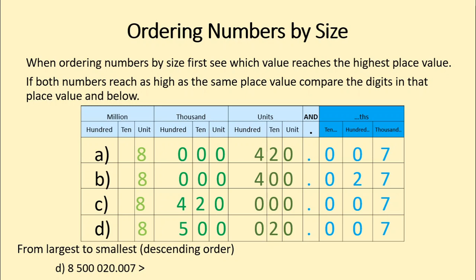My inequality sign shows that D is on the bigger side. The next biggest number: all numbers reach the millions with eight, but the next place value is hundreds of thousands. The only remaining number with a value there is C — it has a four. So that's our next biggest number: 8,420,000 and 7 thousandths. Now we're left with just A and B. They both have the same value in the millions, zero in the hundreds of thousands, zero in the tens of thousands, zero in the units of thousands, and both have fours in the hundreds.